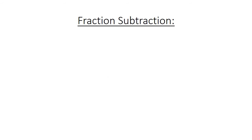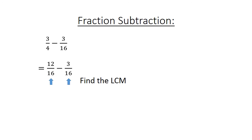Fraction subtraction. 3 over 4 minus 3 over 16. Find the lowest common multiple. 12 over 16 minus 3 over 16 equals 9 over 16.